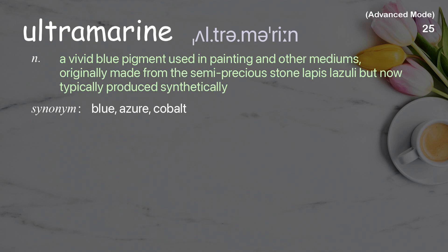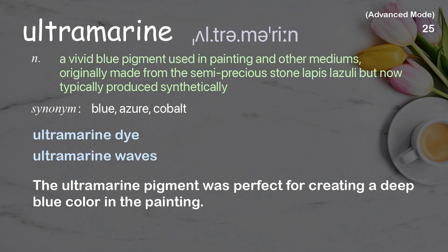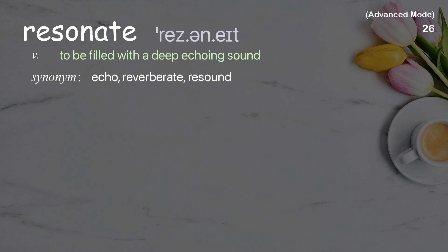Ultramarine: a vivid blue pigment used in painting and other mediums, originally made from the semi-precious stone lapis lazuli, but now typically produced synthetically. Examples: ultramarine dye, ultramarine waves. The ultramarine pigment was perfect for creating a deep blue color in the painting.